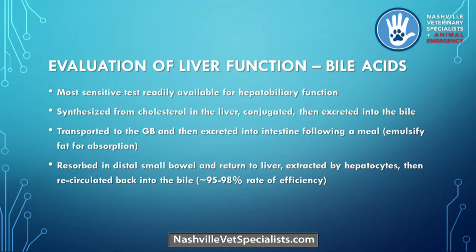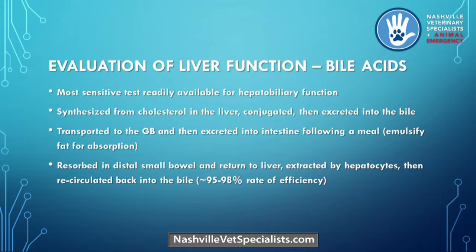For liver function we have bile acids, and if you read Dr. Tweet's work, we're probably not running enough of these — it is the most sensitive test available to detect the level of hepatobiliary function in dogs. Starting as cholesterol, it's conjugated in the liver, excreted into bile, transported to the gallbladder, released into the duodenum for fat emulsification, and 95% to 98% gets recirculated by the enterohepatic circulation. So the vast majority of what's produced just keeps getting reused.